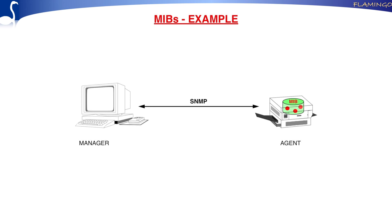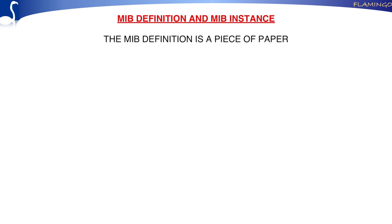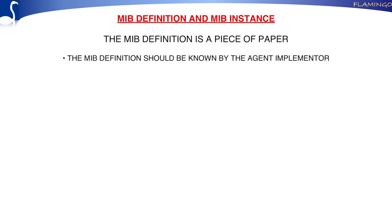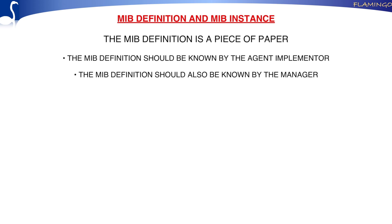People sometimes confuse what I call a MIB definition and a MIB instance. The MIB definition is a thing that's on paper. These definitions should be known by the person who makes the agent. If you build a printer with management capabilities, the implementer should look at that definition and see which variables to implement. But the definition should also be known by the manager, because when the manager gets variables from the printer, it should understand what these variables mean.